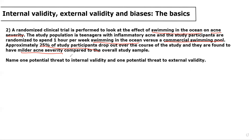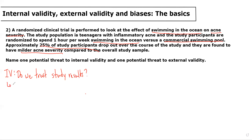We're asked to name one potential threat to internal validity and one potential threat to external validity. Internal validity refers to whether we trust the study results. The three main threats to internal validity are selection bias, measurement bias, and confounding.